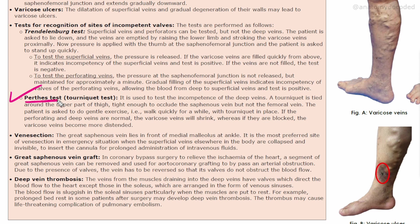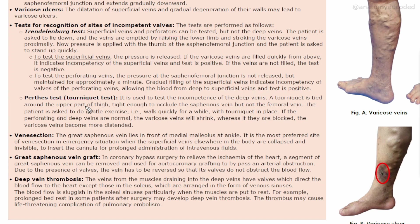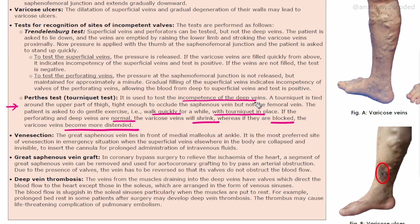Perthes test (tourniquet test) is done to test the deep veins, which are not assessed in Trendelenburg's test. A tourniquet is tied around the upper part of the thigh, tight enough to occlude the saphenous vein but not the femoral vein. The patient performs gentle exercise — walking quickly with the tourniquet in place. If perforating veins and deep veins are normal, the varicose veins will shrink. If they are blocked, the varicose veins become more distended.